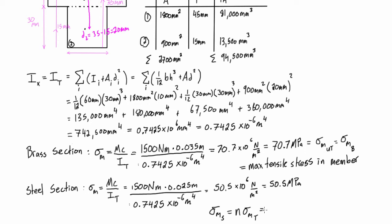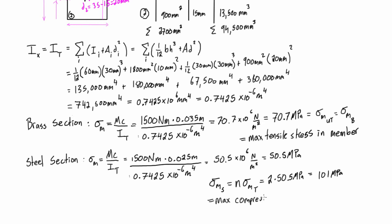So in our case, n was 2, and the max stress that we had calculated was 50.5 megapascals, so that means we're going to be actually getting 101 megapascals, and this is the max compressive stress in the member.